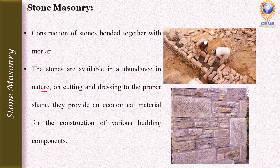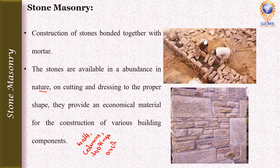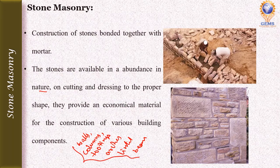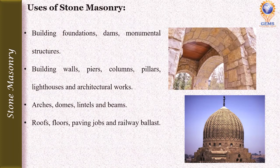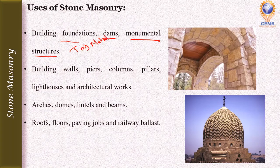By cutting and dressing stones to the proper shape, they can be used in the construction of various building components such as walls, columns, footings, arches, lintels, and beams. Stone masonry is used in building foundations, dams, and monumental structures. The best example of stone masonry is the Taj Mahal, which is built fully of stone — that stone is marble.